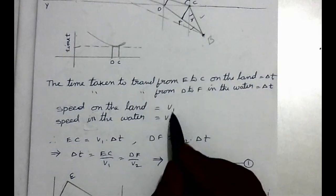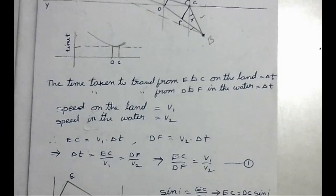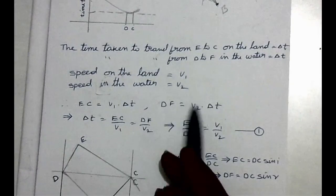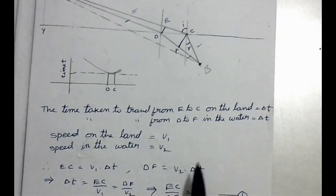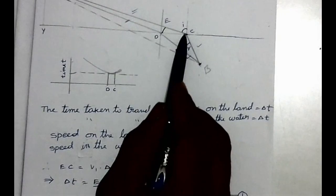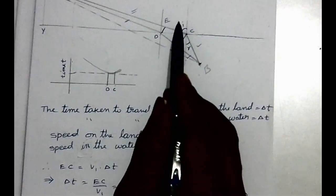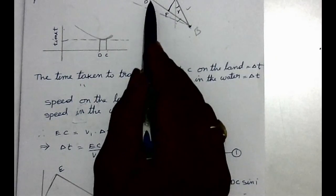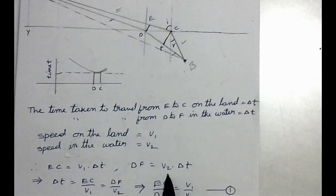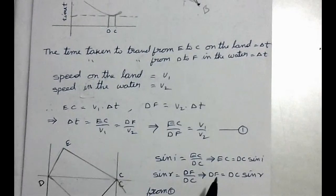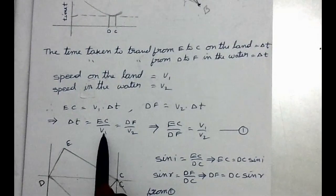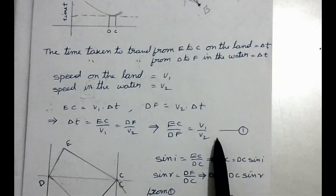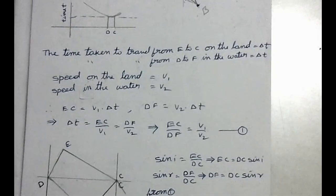The speed of running on land is v1 and the speed of swimming in water is v2. The distance EC equals speed times time, which is v1 times delta t. The distance DF equals v2 times delta t. From this, delta t equals EC divided by v1, which equals DF divided by v2. Therefore, EC divided by DF equals v1 divided by v2. Let this be equation number one.